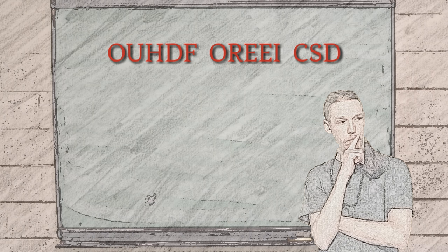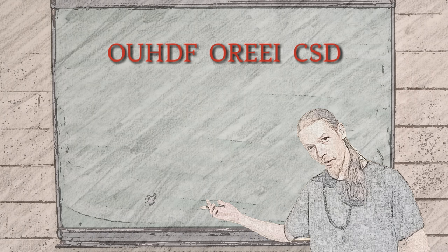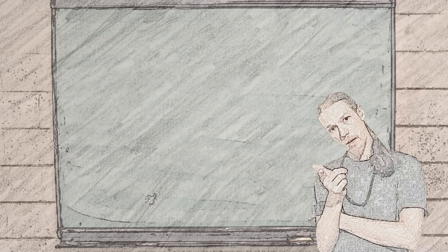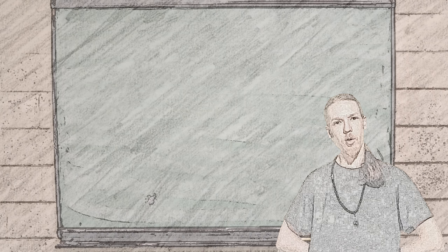Furthermore, some of the higher numbers would leave most of the text unscrambled, so in this example the key can be assumed to be between three and six — leaving just four possibilities, easily solvable by hand. And that is pretty much it.